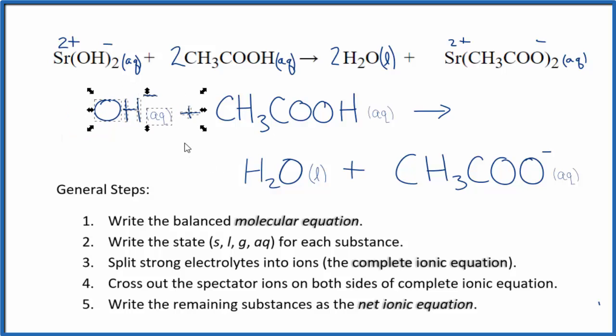But by convention, we don't write the 1. So this is the balanced net ionic equation, again, for strontium hydroxide plus acetic acid. If you note charge is balanced, we have a negative charge on the reactants, and we have a negative charge on the products. So charge is balanced. And if you count the atoms up, they're balanced as well.